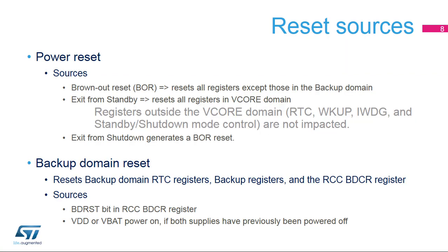The second type of reset is the power reset. The brownout reset, or BOR, resets all registers except those in the backup domain powered by VBAT, which contains the RTC and the external low-speed oscillator. When exiting standby mode, all registers powered by the regulator are reset. When exiting shutdown mode, a brownout reset is generated.